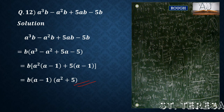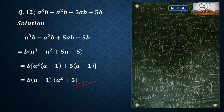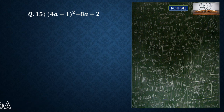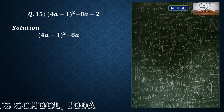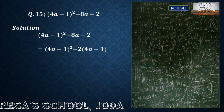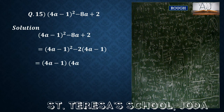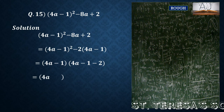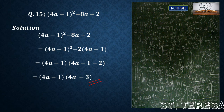Be careful whenever you are doing it and practice. Question number 15: (4a minus 1) whole square minus 8a plus 2. (4a minus 1) whole square stays as it is. From the last two terms, minus 2 is common, so taking minus 2 common gives (4a minus 1) inside the bracket. Now in both terms we have (4a minus 1) common. What is left in the first is (4a minus 1), and in the second is minus 2. So (4a minus 1) and (4a minus 1 minus 2), which gives factors (4a minus 1) and (4a minus 3).